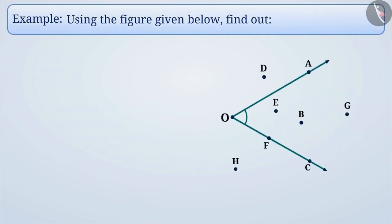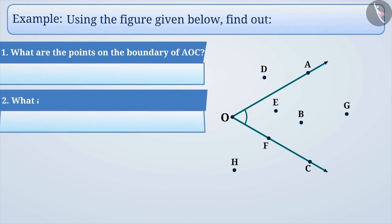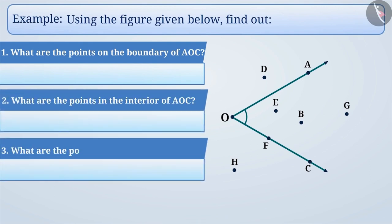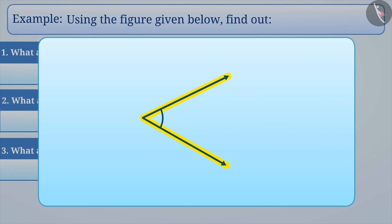In the figure given below, find out what are the points on the boundary of angle AOC, what are the points in the interior of angle AOC, and what are the points on the exterior of angle AOC. The part formed by the arms or sides of the angle is called the boundary. The part inside the boundary is called the interior, and the part outside the boundary is called the exterior of the angle.